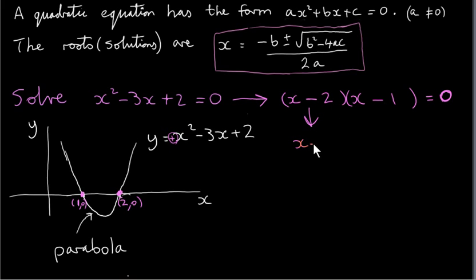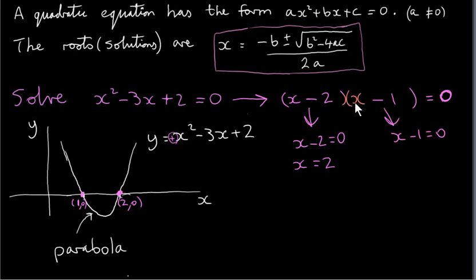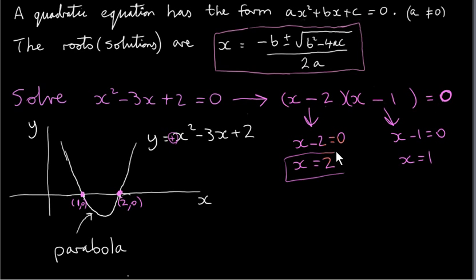If x minus 2 is 0, that means x must equal 2. If we plug 2 in, we get 2 minus 2, which is 0, and we'll have 0 times (2 minus 1), which is just 0. Similarly, if x minus 1 is 0, then all of this will be 0, leading us to x equals 1. If we plug 1 in, we'll get 1 minus 1, which is 0, and we'll have 0 times (1 minus 2), which is 0. So when you have 0 on the right-hand side, you just put each factor equal to 0. So here are our two solutions.